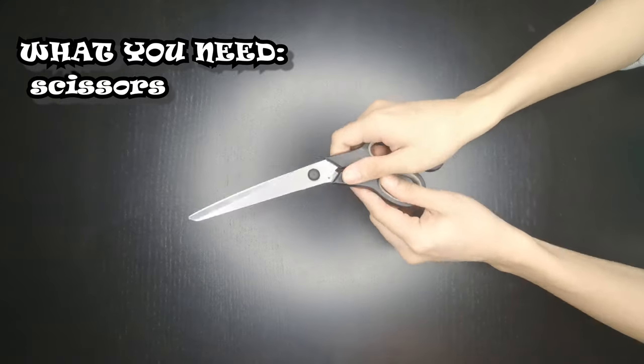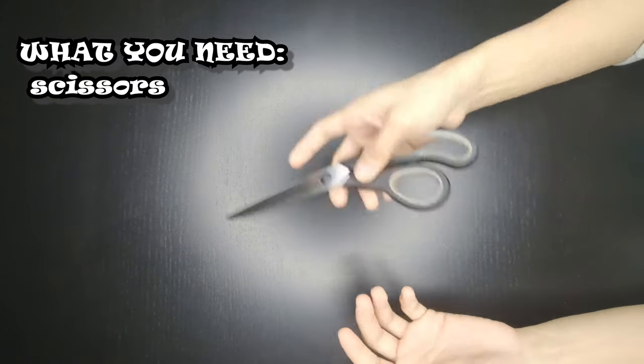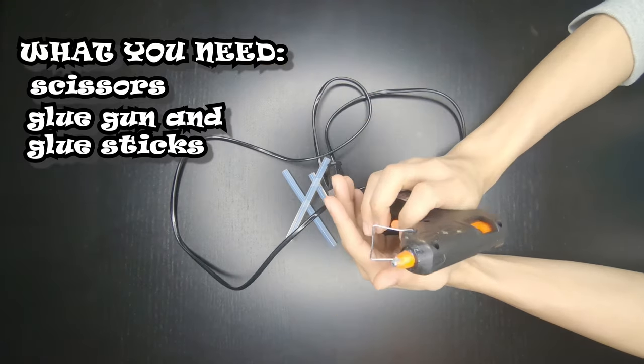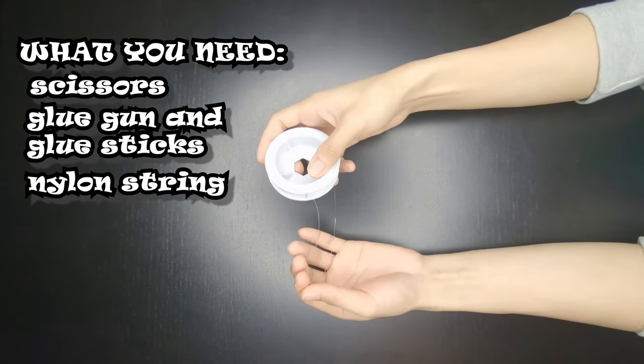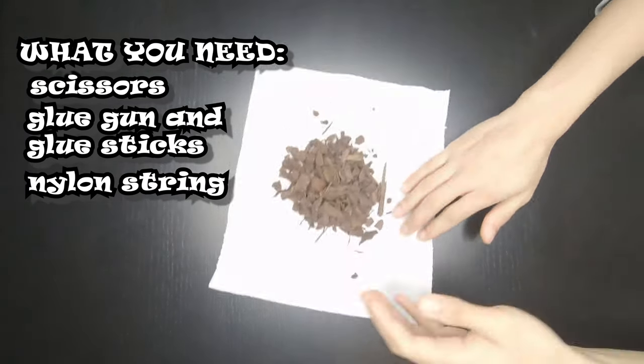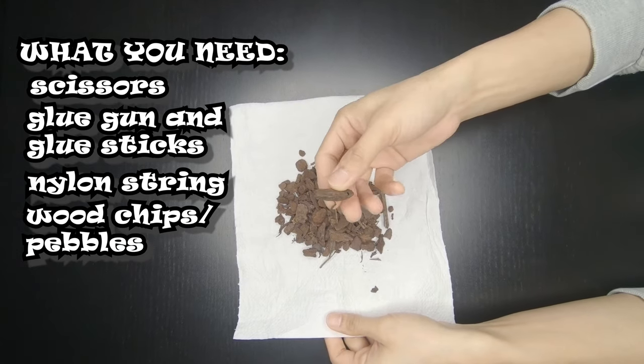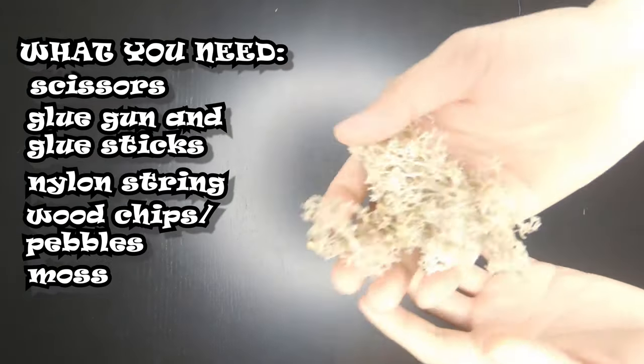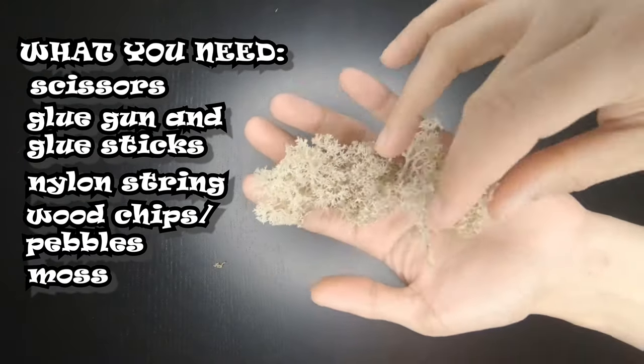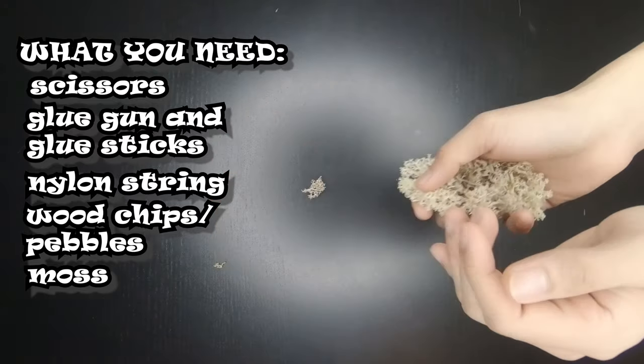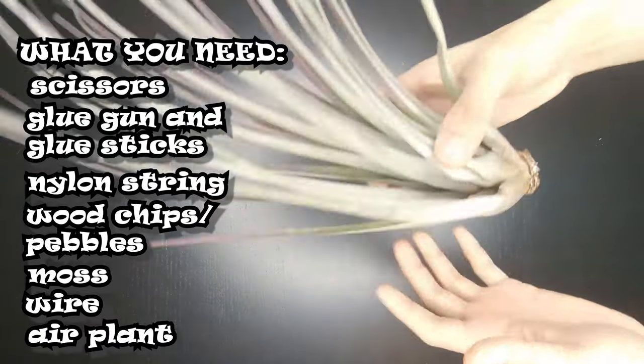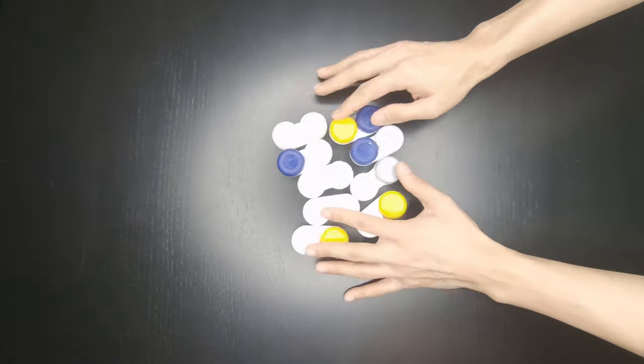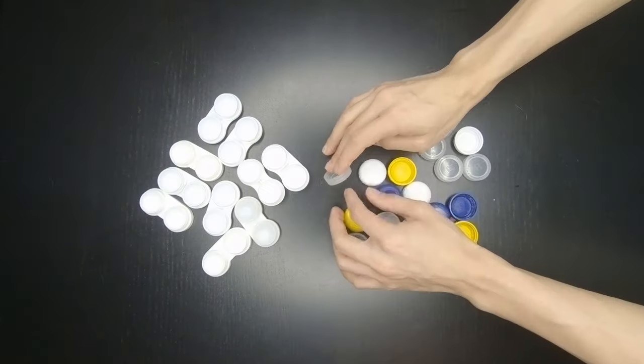What you need are: a pair of good scissors, a glue gun and glue sticks, a string preferably nylon, wood chips or pieces of wood (if you don't have any you can also use small stones or pebbles), artificial moss, a coil wire, an air plant (in this video I'll be using a Tillandsia fasciculata), and contact lens containers - we'll only be using the covers.